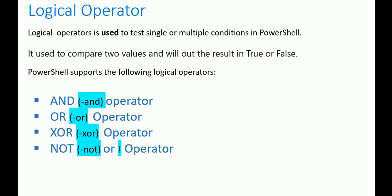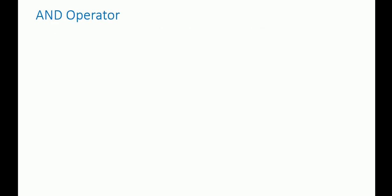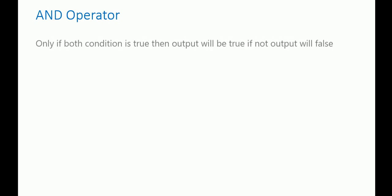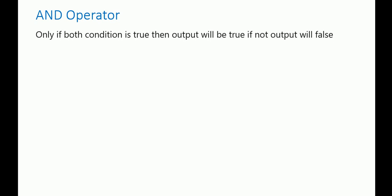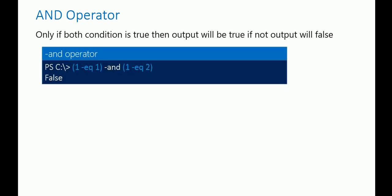PowerShell supports the following logical operators: the AND operator, OR operator, XOR operator, and NOT operator. Now let's understand the AND operator. Only if both conditions are true, or all conditions are true, then the output will be true. If even a single condition is false, then the overall output will be false. For example, one equals one is true, one equals two is false, so the overall output is false.